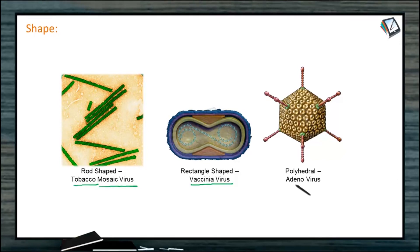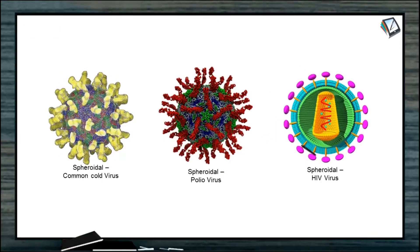This is polyhedral. Example: adenovirus. These are the spherical viruses. Spheroidal: common cold virus, poliovirus, HIV virus. These are the models of viruses.